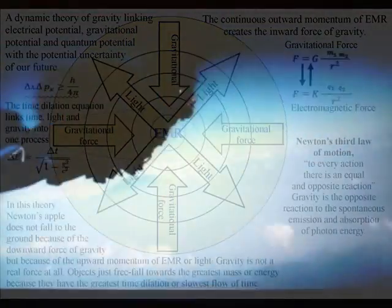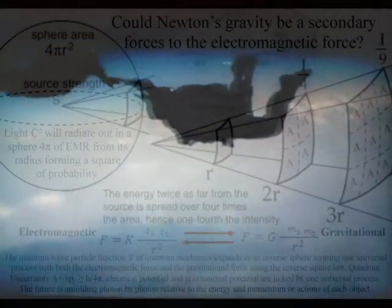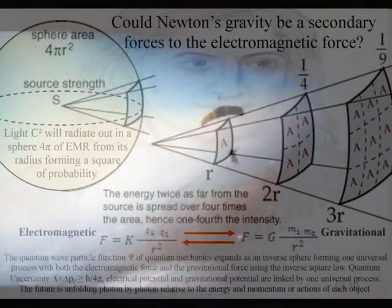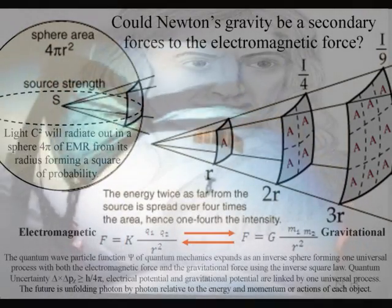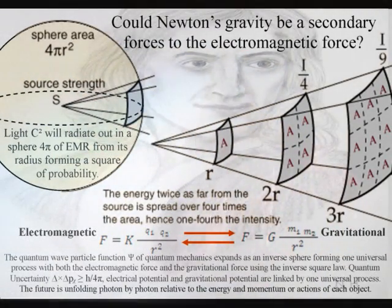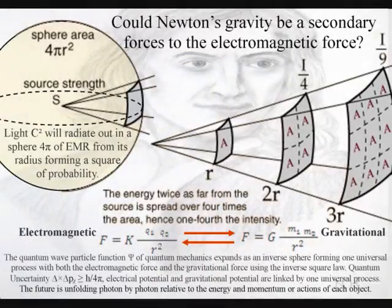This can be seen mathematically with both electromagnetic force and the gravitational force sharing the inverse square law. The light photon of quantum mechanics is the carrier of the electromagnetic force, with the movement of charge forming one universal process of energy exchange.